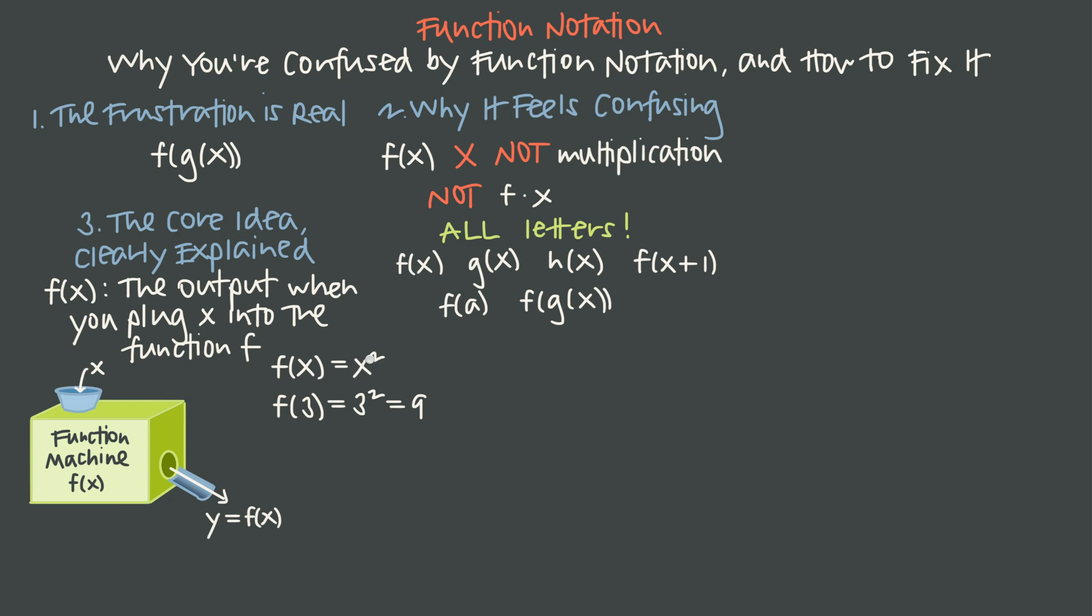So on this right hand side, we get 3 squared, or of course, that's the same thing as 9. What that tells us is that when we put x equals 3 into the function machine for f, that the machine is going to spit out to us the value 9.